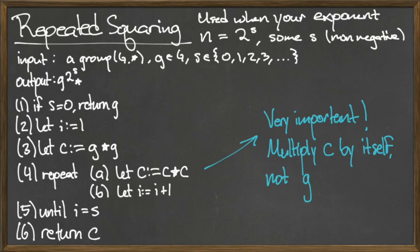The first step in the repeated squaring algorithm is the if statement: if s equals 0, then return g. Since 2 to the 0th power is 1, and g to the first power is g itself, if s equals 0, then we return the element g.